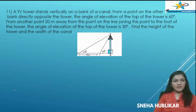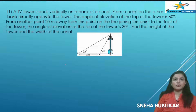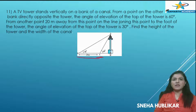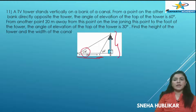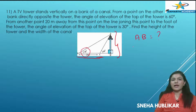Question 11: A TV tower stands vertically on a bank of a canal. From a point on the other bank directly opposite, the angle of elevation is 60 degrees. From a point 20 meters away from this, the angle of elevation is 30 degrees. Find the height of the tower and the width of the canal. AB is the tower and BC is the width of the canal — both need to be found.